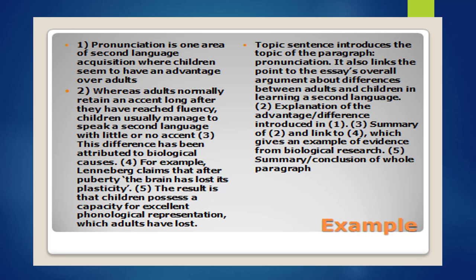The topic sentence introduces the topic of the paragraph — pronunciation — and also links the point to the essay's overall argument about differences between adults and children in learning a second language. Second, explanation of the advantage and difference introduced in the first point. Third, summary of the second point and link to the fourth, which gives an example of evidence from biological research. And fifth, summary and conclusion of the whole paragraph.